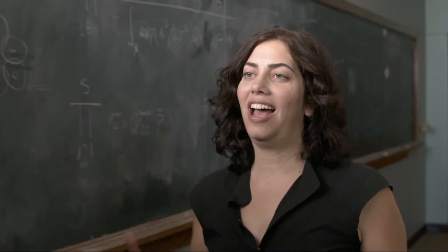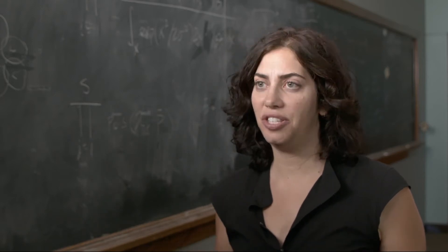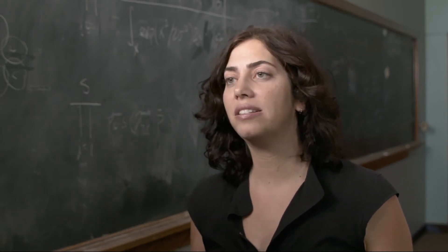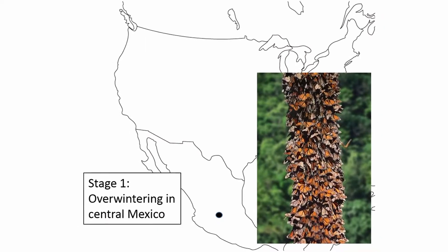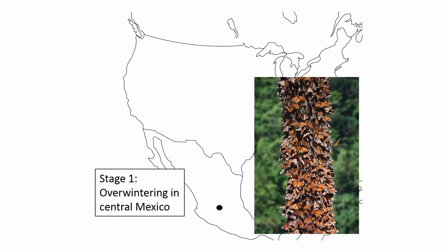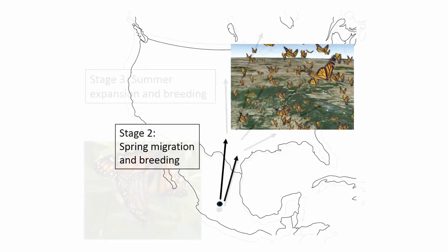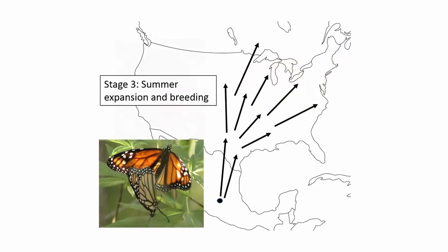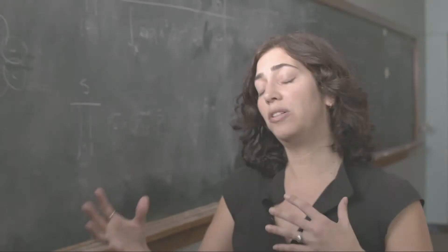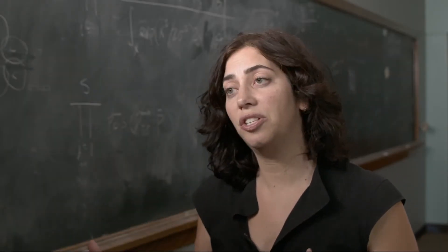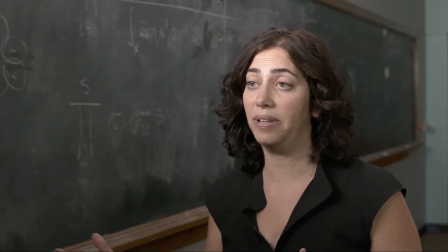One of the projects that our lab has been focusing on for more than a decade is to try and understand monarch declines. Monarchs have a really interesting and unique migration where they migrate across North America from Mexico all the way up through the United States and Canada over multiple generations. Because of that, there are multiple different stressors along those migratory routes influencing monarch population sizes.